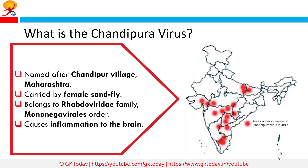What is the Chandipura virus? Named after the Maharashtra village where the virus was first discovered, the likely vector or carrier of the virus is the female phlebotomine sandfly. It has been detected in sandflies in Senegal and Nigeria, apart from India. The virus is known to cause inflammation of the brain and progresses rapidly from an influenza-like illness to coma and death. Chandipura virus, in short CHPV, belongs to the Rhabdoviridae family in the order Mononegavirales of the genus Vesiculovirus.